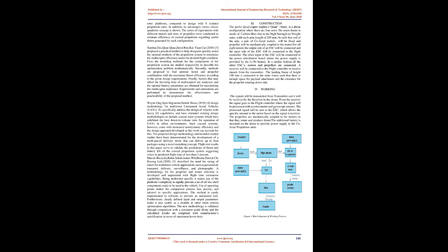Wojciech Adam Bondyra et al. (2016) proposed a contrast experimental analysis of different types of propulsion systems for multi-rotor UAVs. One of the most interesting designs is the X8 quadcopter, which extends the original quadrotor concept to eight motors arranged in four coaxial pairs. Loss of efficiency occurs due to the coaxial propeller configuration, because the lower propeller loses thrust working in the prop wash of the upper propeller. This paper presents experimental verification of performance of such propulsion systems compared to designs with eight isolated propulsion units, and shows advantages versus the classic quadrotor concept. Experiments with different motors and propeller sizes were conducted to estimate efficiency of coaxial propulsion regarding useful thrust generated by each configuration.